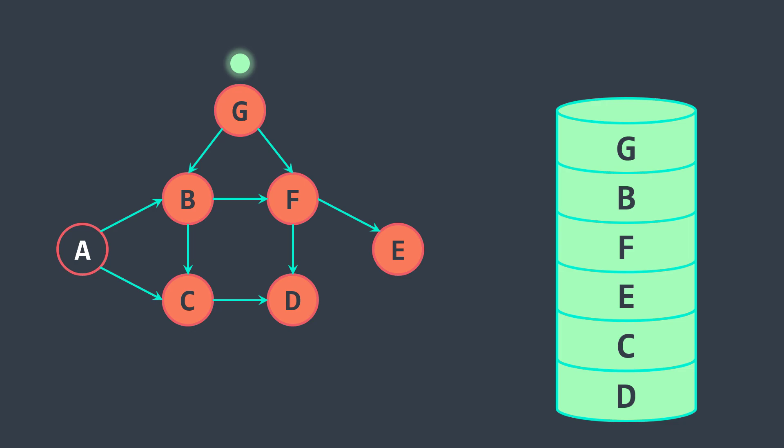G was the node we started with and we finished the depth first search traversal, but we still have unvisited nodes, so we continue. We still have A and all its neighbors are visited, so we directly push.